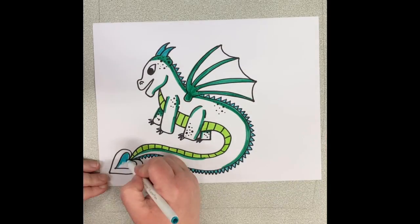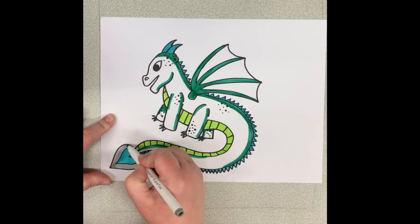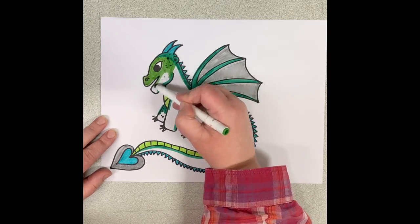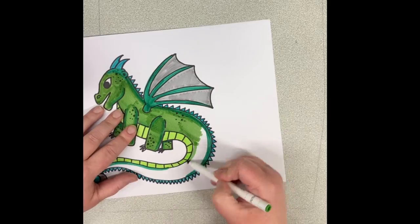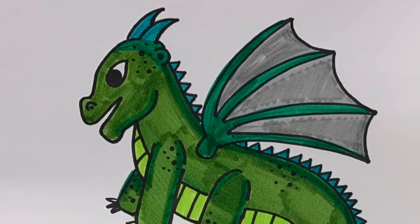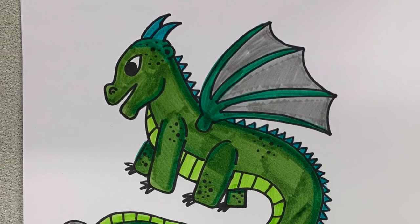So the dark green around the edges that I did kind of gives him a little bit of shadow. But you can decide if you'd want to do that or not. And I'm really excited to see what your dragons look like. And what colors you decide to use for yours. Have fun!